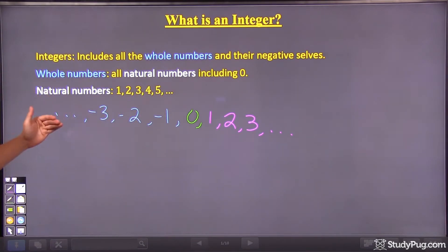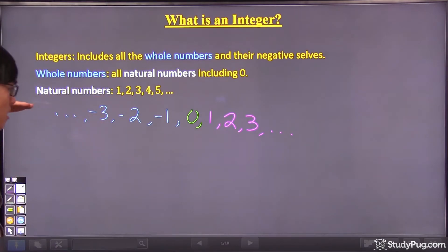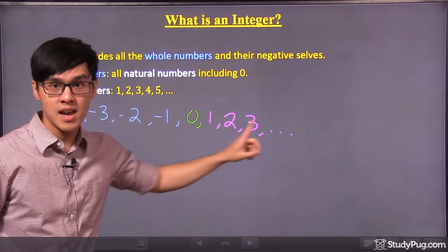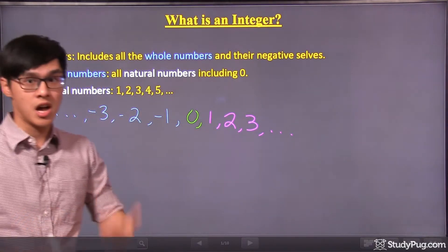So all in all, the integers are all these numbers. From negative goes all the way to zero and then goes to the positive side and it keeps going on. So this is a definition of an integer.